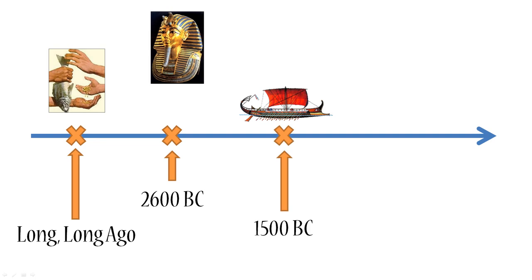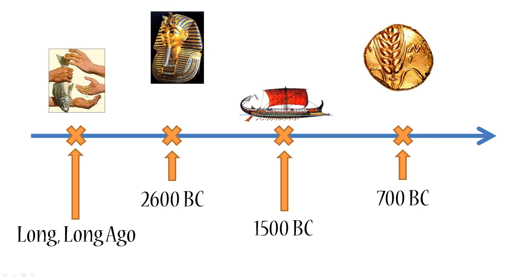Next, around 1500 BC, countries started using gold for international trade. So instead of just exchanging goods they would exchange gold for goods and goods for gold, which simplified things. Then, to simplify things even further, around 700 BC the first gold coins were created. That was very handy because before that people had to verify that the gold they were receiving was actually gold and also weigh it up. With gold coins they could already know what value those coins were carrying, and that sped up the process of exchange.